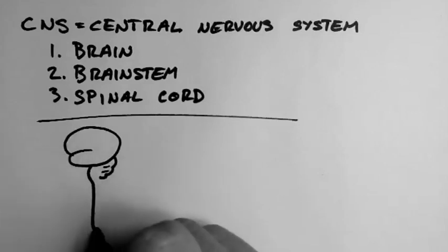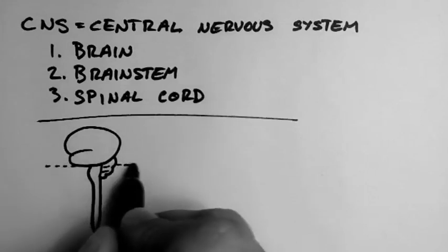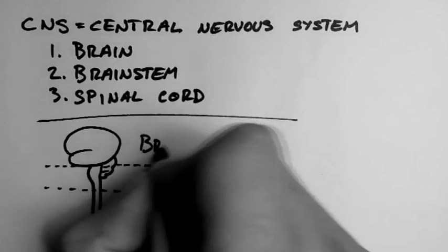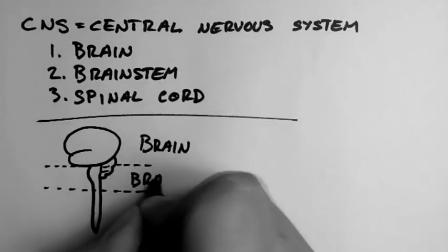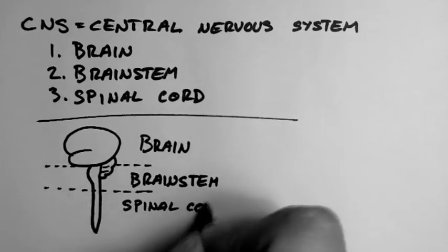Let's have a look at the spinal cord first. From a side view, the central nervous system kind of looks like this. And here are the three sections I spoke of: the brain, the brainstem, and the spinal cord.